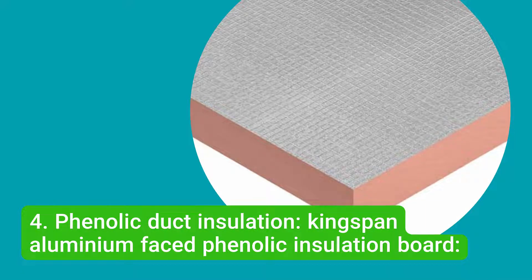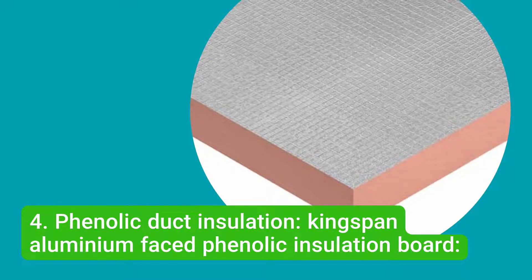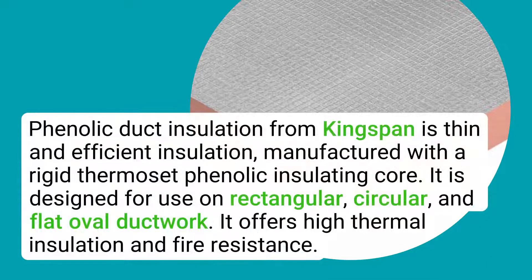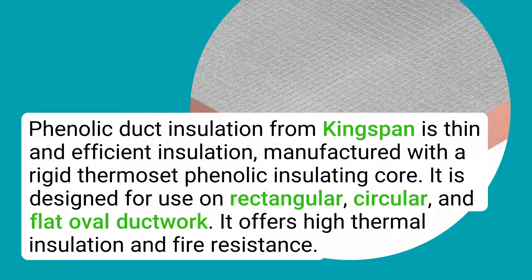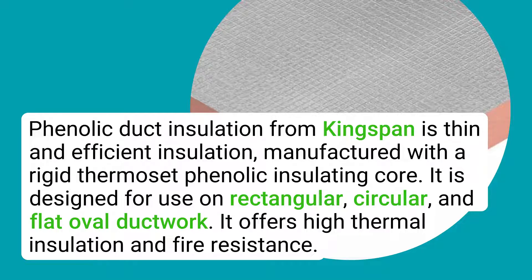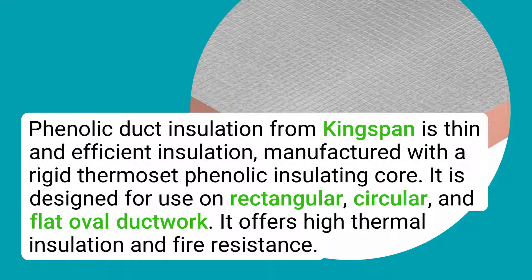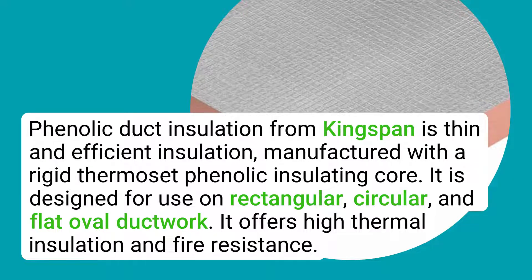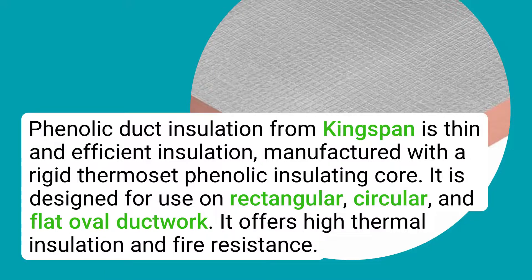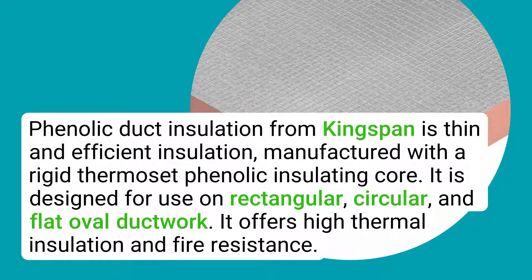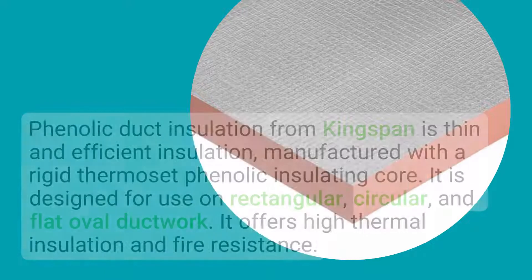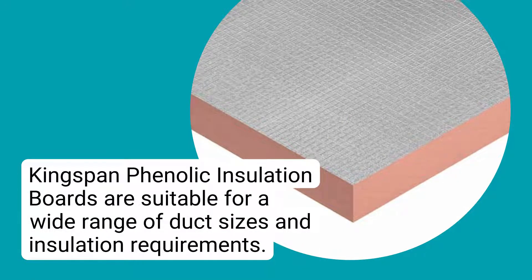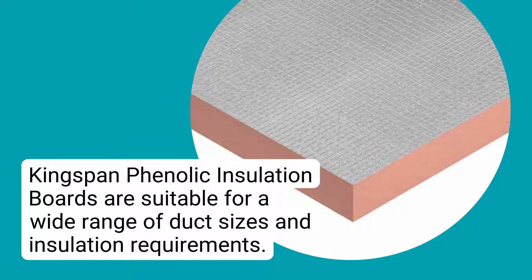Phenolic Duct Insulation — Kingspan Aluminium Faced Phenolic Insulation Board. Phenolic duct insulation from Kingspan is thin and efficient insulation manufactured with a rigid thermoset phenolic insulating core. It is designed for use on rectangular, circular, and flat-oval ductwork. It offers high thermal insulation and fire resistance. Kingspan phenolic insulation boards are suitable for a wide range of duct sizes and insulation requirements.